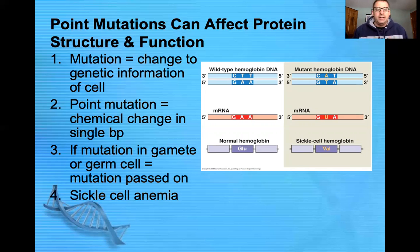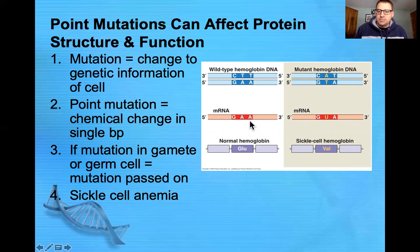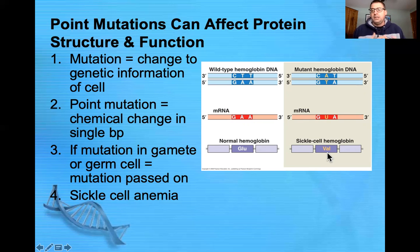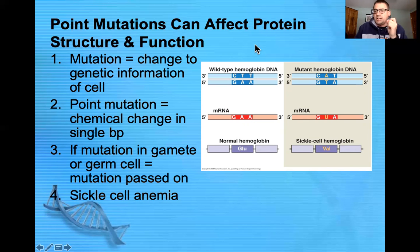The example shown here is the point mutation that causes sickle cell anemia, where a single base pair is changed from a T to an A. When that's transcribed, instead of having an A at the second position of this codon, a U is put into place. As a result, instead of having the amino acid glutamic acid — a charged amino acid — you get the nonpolar amino acid valine, which causes hemoglobin to fold up improperly. This causes the cells to become sickle-shaped and leads to all the problems associated with sickle cell anemia — caused by just one change to one base in one codon in the gene for hemoglobin.